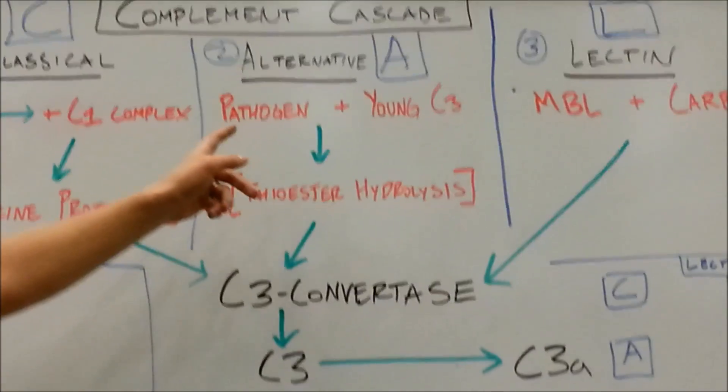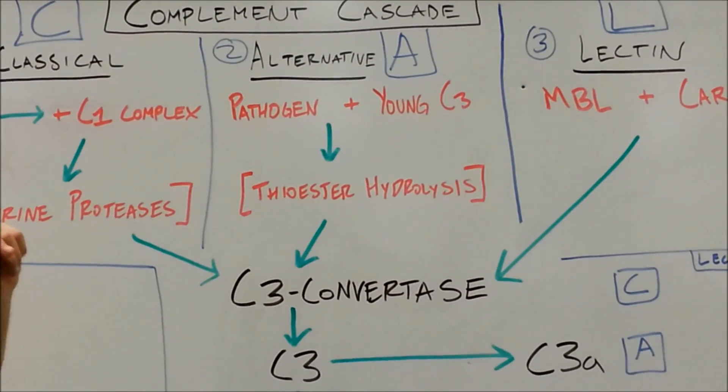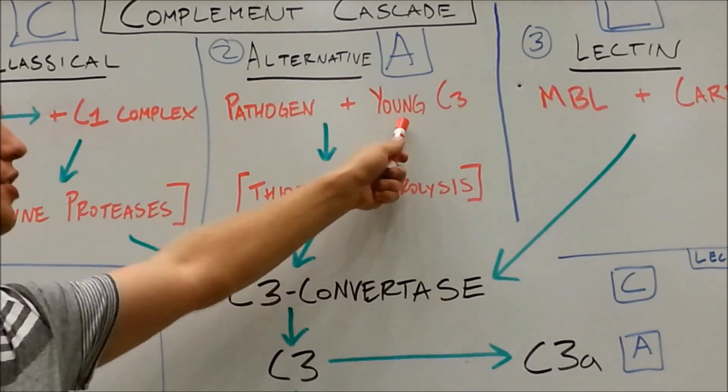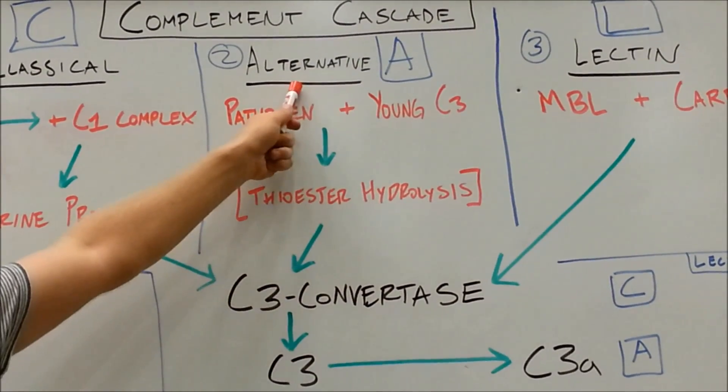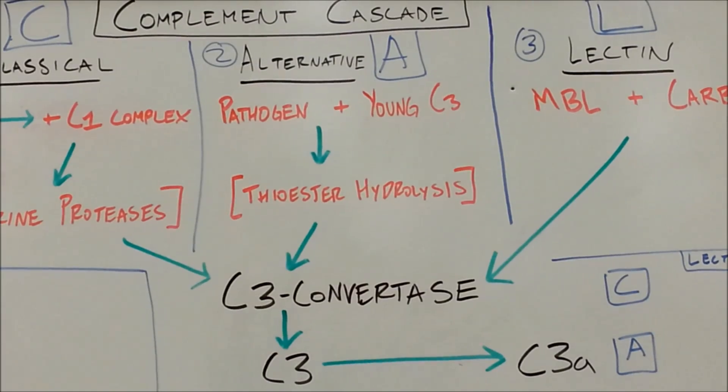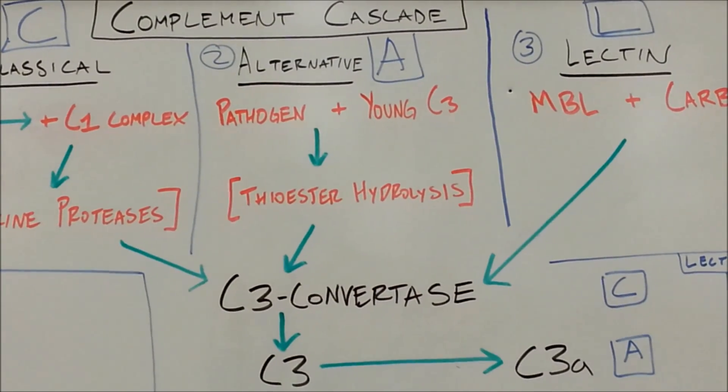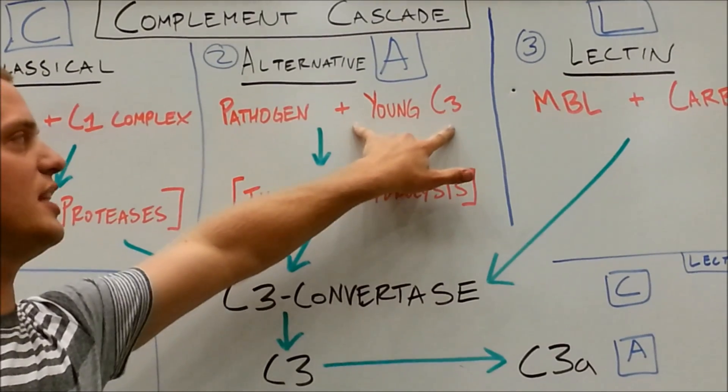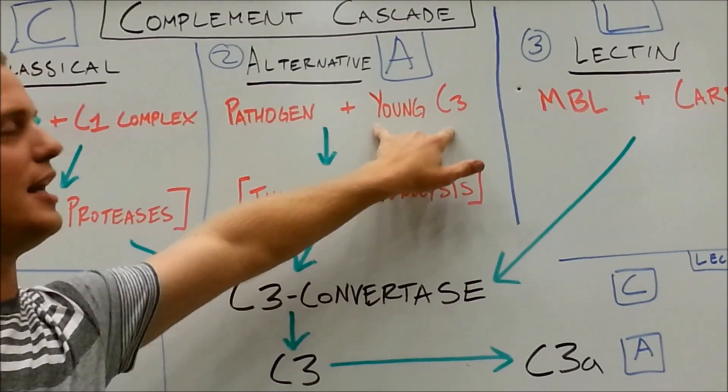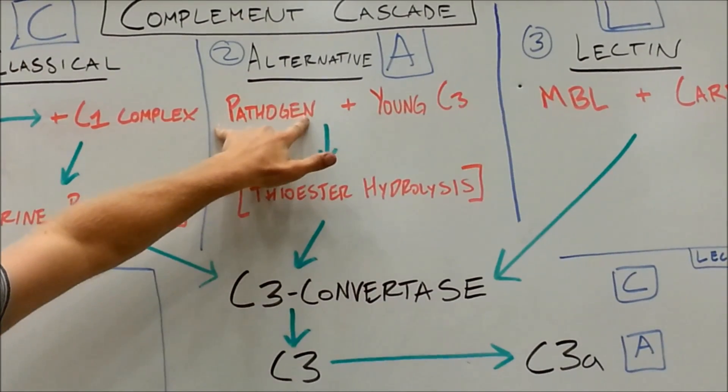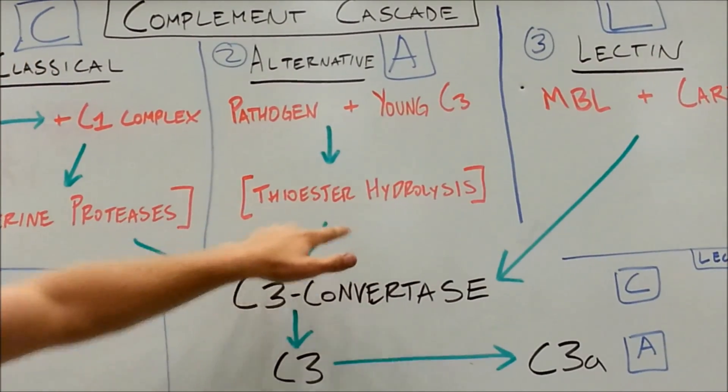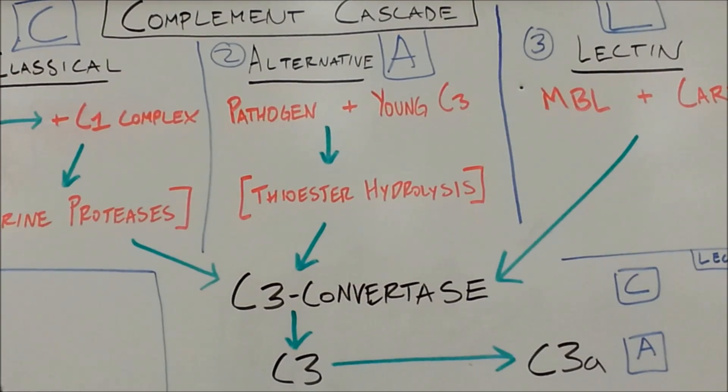Now move over to the alternative activating pathway, this middle one here. And the gist of this guy, and the way that I remember it, is that you're dealing with a young or an immature or an alternative C3. So you're dealing with alternative high schools, alternative youth, alternative music, all those things are kind of wild, kind of young, kind of different. And so you're essentially dealing with your C3 that you're going to be dealing with in your C3 convertase. However, it's a little immature. And what makes it really wise up is when it deals with the pathogen. So that pathogen is going to mix with your young, your immature C3.